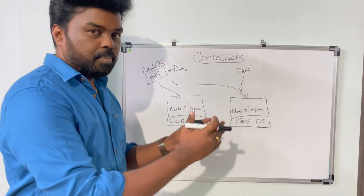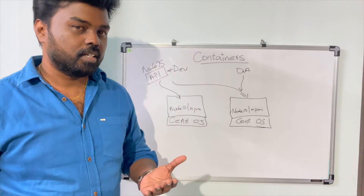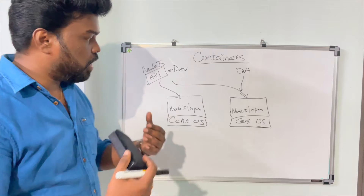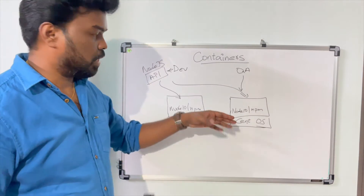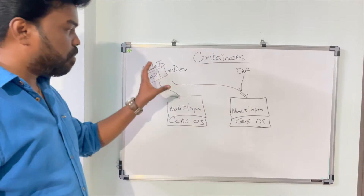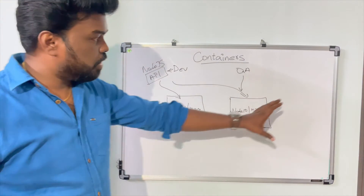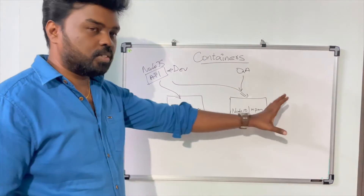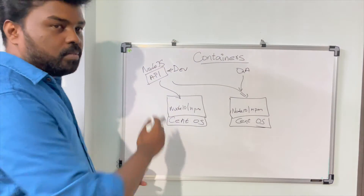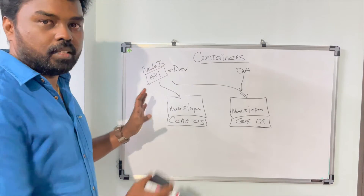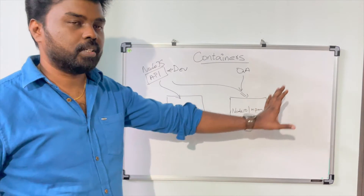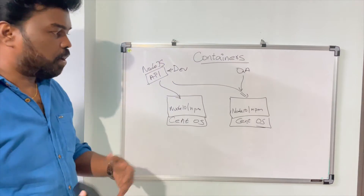Now one of the challenges we could face in this approach is — consider if the testing team installed a different version of CentOS, or a different Linux distribution, or a different version of the Node runtime such as Node 8, or if they missed installing some of the NPM dependencies. The application might behave incorrectly in the testing environment. Similarly, if some configurations are different in the production environment, the application will behave completely differently there too. This is where the actual issue comes into picture: developers might claim the application runs properly in dev, but the testing team would complain that it is not running properly in the testing environment.